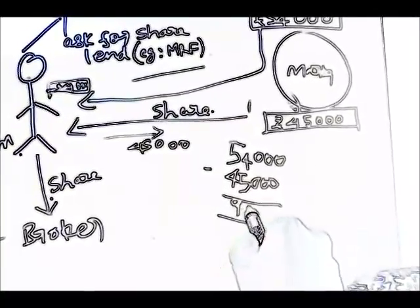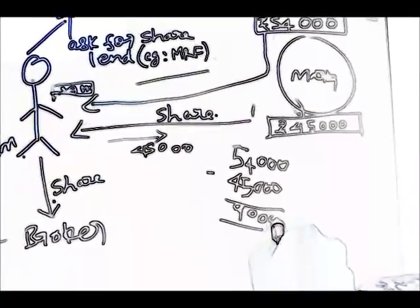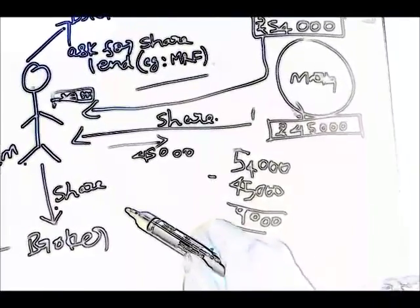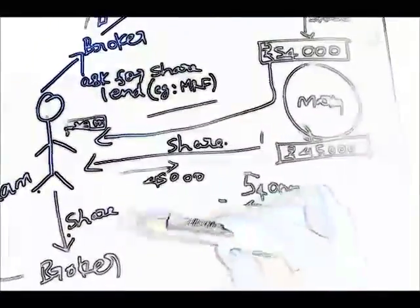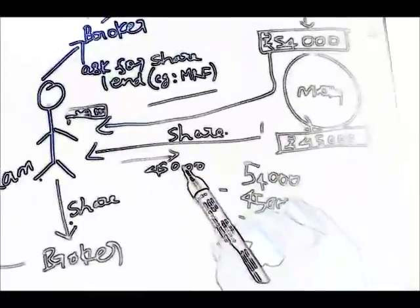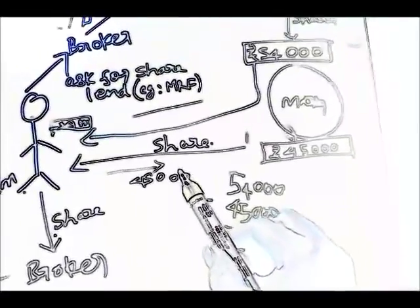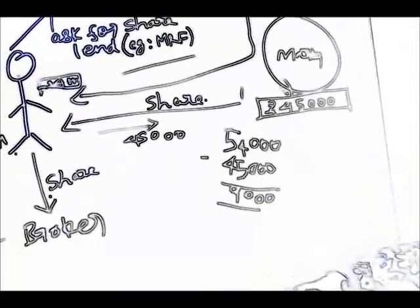So he gets a profit of 9,000 in his account, not by buying any share or selling any share. He is just lending the share and selling the share on the market. The next day he gets profit of 9,000.